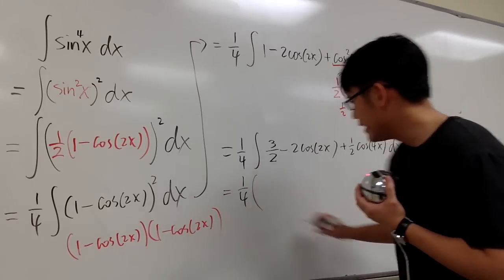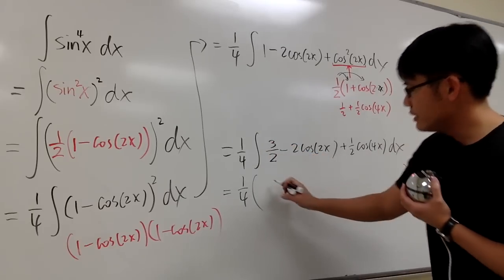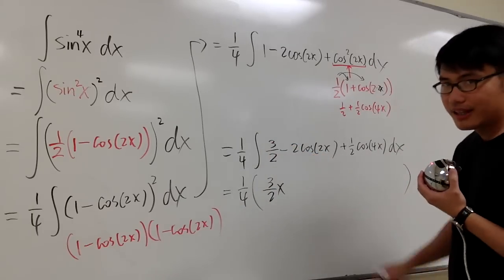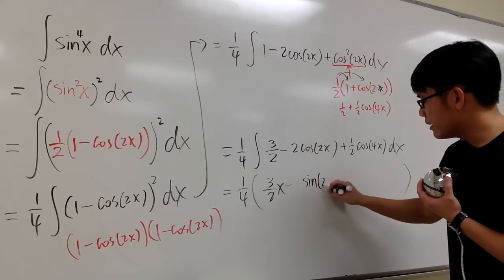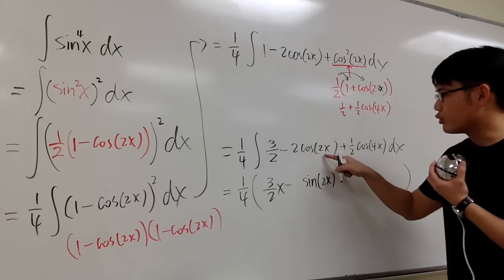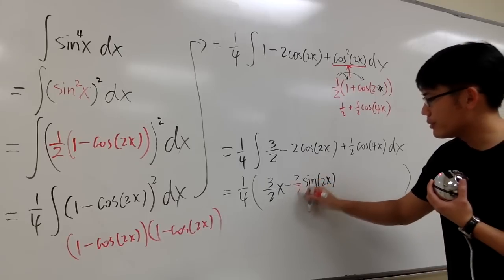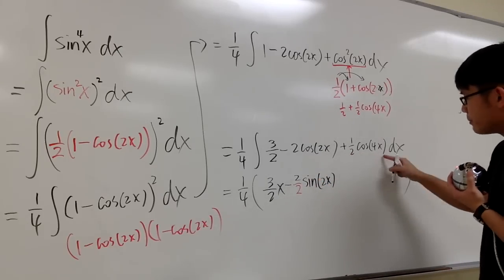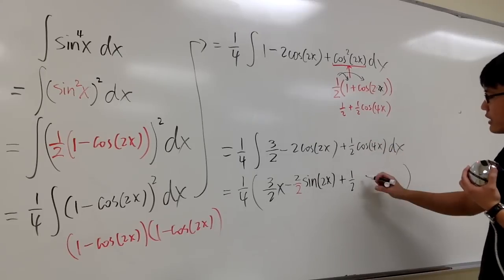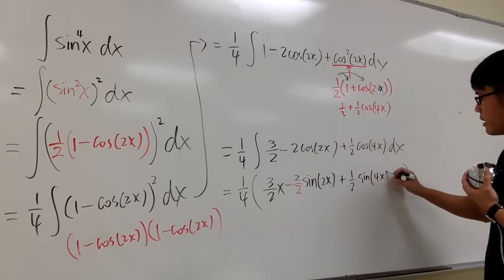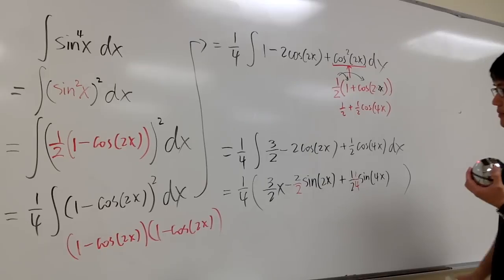This is 1 over 4, and let's open the parentheses for the integrals. The integral of three-halves with respect to x is just three-halves x. The integral of cosine is positive sine, so the negative stays the same and the input stays the same, but when going backwards you divide by the derivative of the inside. The derivative of 2x is 2, so we divide by 2, giving minus 2 cosine 2x divided by 2, which is minus sine of 2x. Then plus one-half, and the antiderivative of cosine of 4x is sine of 4x, divided by the derivative inside, which is 4 — so times one-fourth.